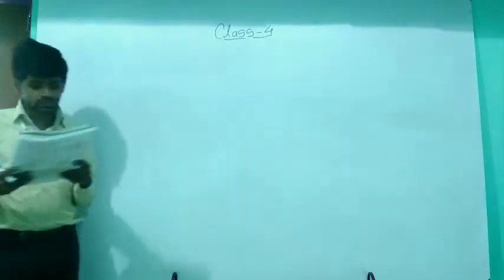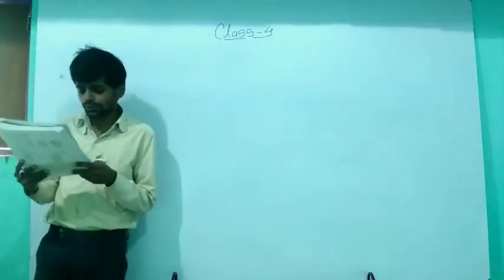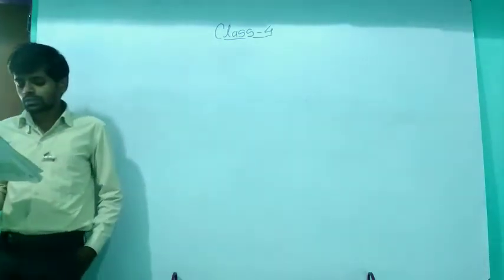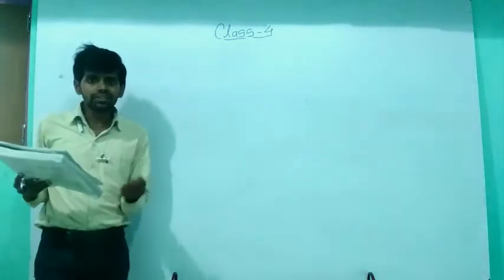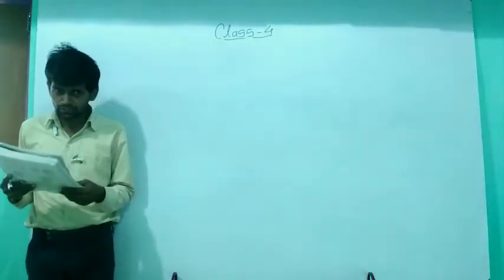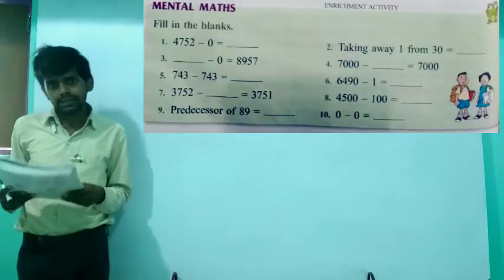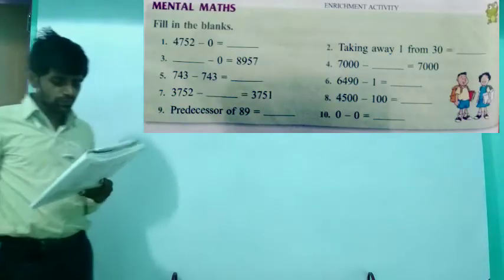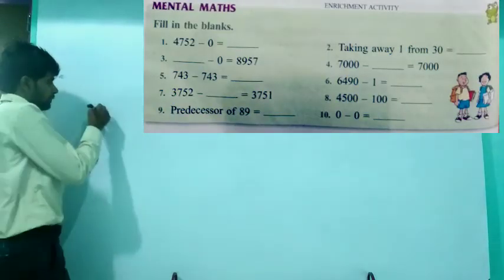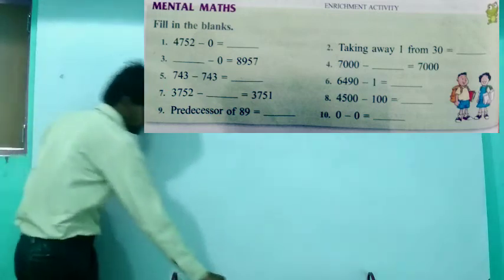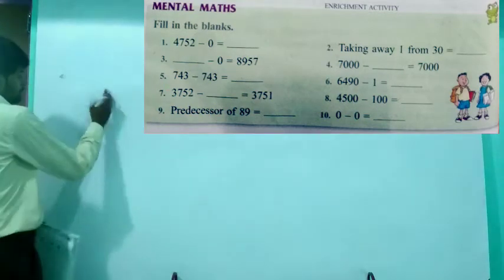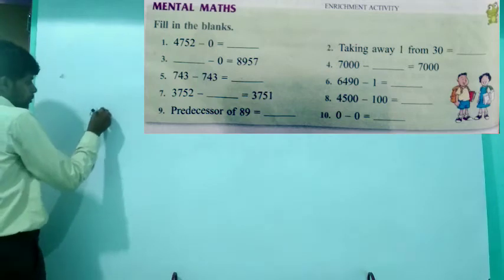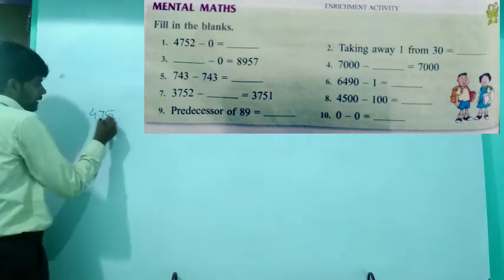Fill in the blank. Look at the first question: 4752 minus 0. We have learned that if 0 is subtracted from any number, the difference is the number itself. So the first answer is 4752.